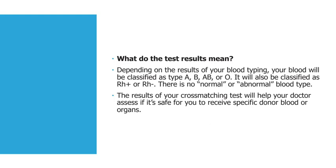What do the test results mean? Depending on the results of your blood typing, your blood will be classified as type A, B, AB, or O. It will also be classified as RH positive or RH negative. There is no normal or abnormal blood type. The results of your cross matching test will help your doctor assess if it is safe for you to receive specific donor blood or an organ.